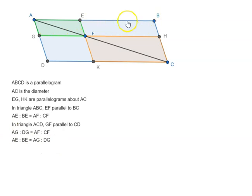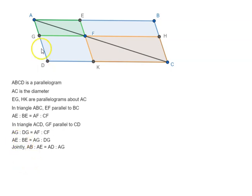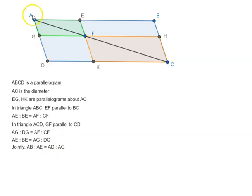So AE is to BE as AG is to BG. Now let us take the sum of this — we can say jointly: AB, which is AE plus BE, gives us AB is to AE equal to AD is to AG. AD is AG plus GD, so AG plus GD is AD. So jointly, AB is to AE equals AD is to AG.